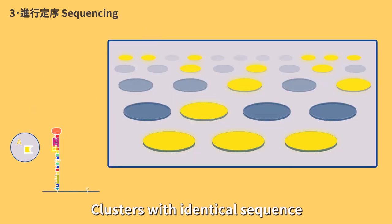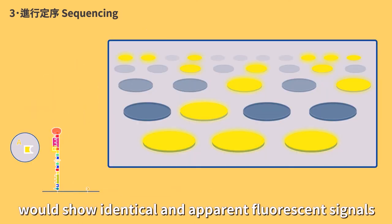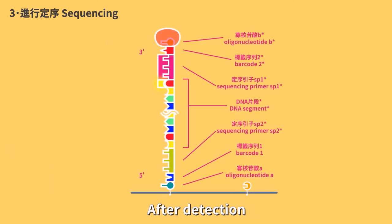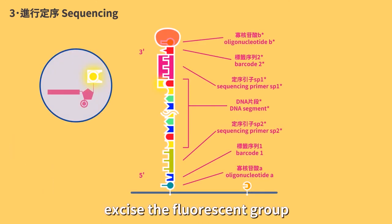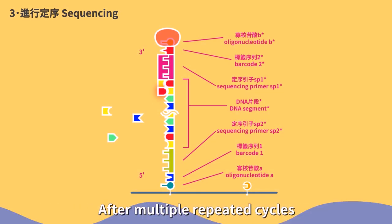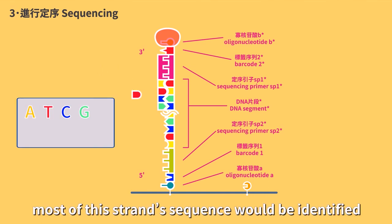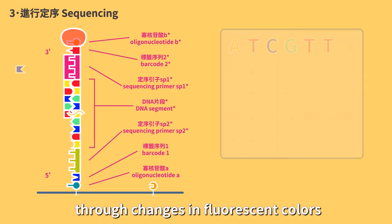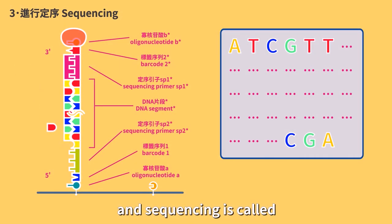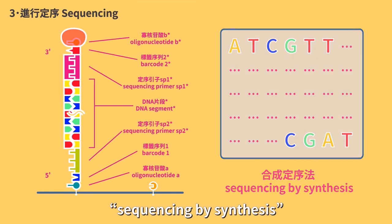After washing away the deoxyribonucleotides without binding, detect four fluorescents to know the base added. Clusters with identical sequences will show identical and apparent fluorescent signals, which increases interpretation accuracy. After detection, excise the fluorescent group and the 3' OH protection group, and conduct the next elongation and sequencing. After multiple repeated cycles, most of the strands sequence will be identified through changes in fluorescent colors. This method of simultaneous synthesizing and sequencing is called sequencing by synthesis.